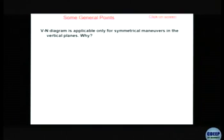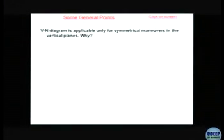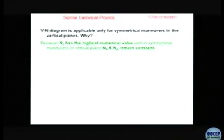The V-N diagram is only applicable for a very limited type of maneuvers — specifically, symmetrical maneuvers in the vertical plane. A typical example would be a vertical loop. Why are we looking only at symmetrical maneuvers? Because the highest numerical value of load factors among Nx, Ny, and Nz occurs only when you have maneuvers in the vertical plane.